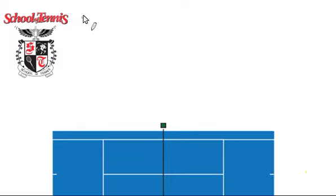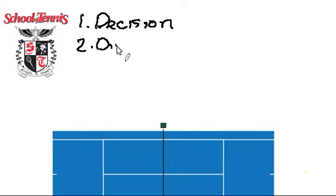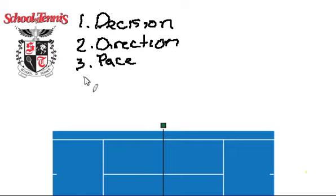So we'll deal with it in terms of number one, what I'm going to call the decision. Number two is going to be the direction you hit the shot. Number three is going to be the pace of the shot. And number four is going to be the depth.